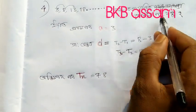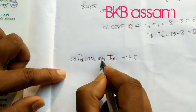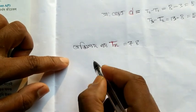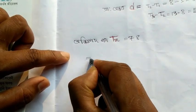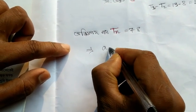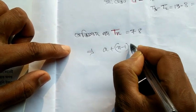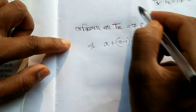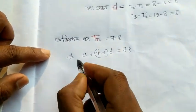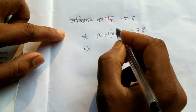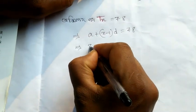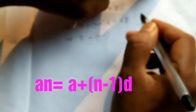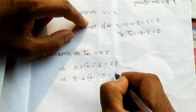So the last term is 78. Now I put: 3 plus n minus 1, times d equals 78.